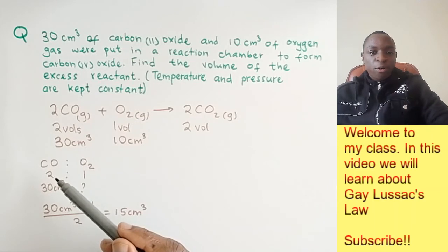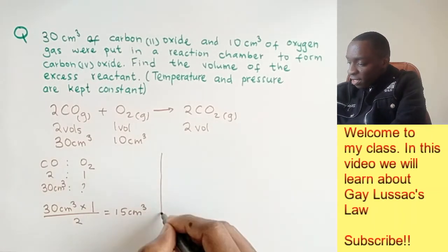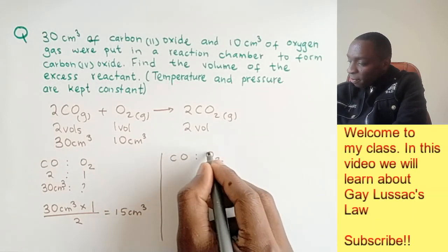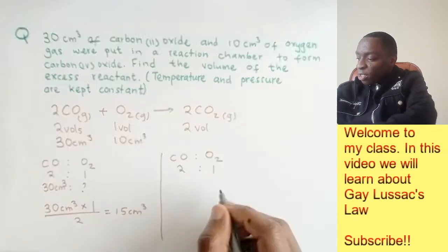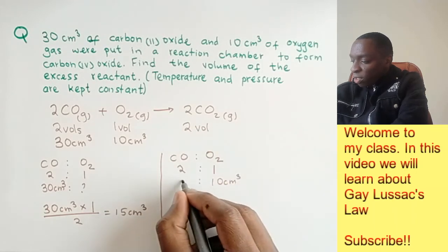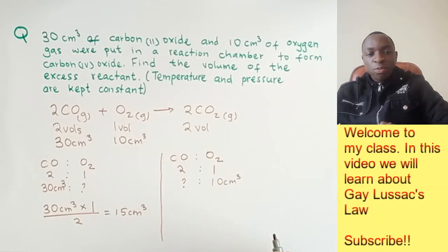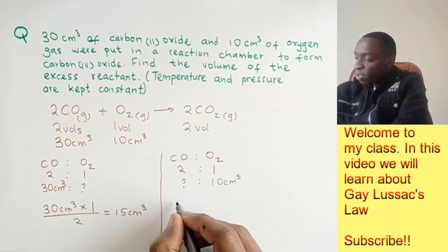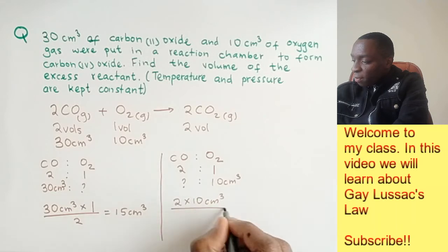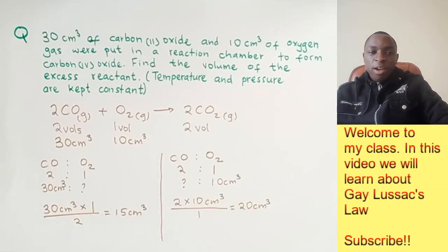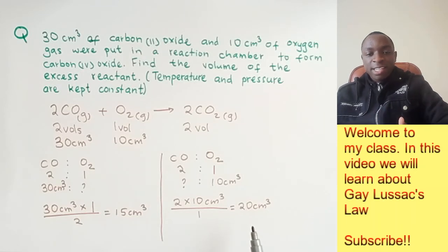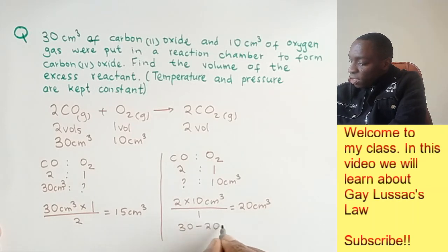Next, we find what volume of carbon-2 oxide is in excess. Using the volume ratios of carbon-2 oxide to oxygen — 2 to 1 — and referring to the oxygen side: we have 10 cm³ of oxygen. Cross-multiplying: 2 × 10 cm³ ÷ 1 = 20 cm³ of carbon-2 oxide took part in the reaction. Therefore, the excess reactant is 30 cm³ minus 20 cm³, giving us 10 cm³ of carbon-2 oxide in excess.